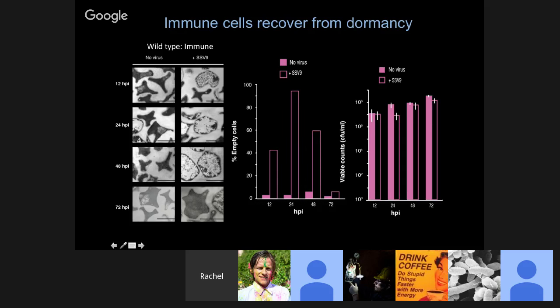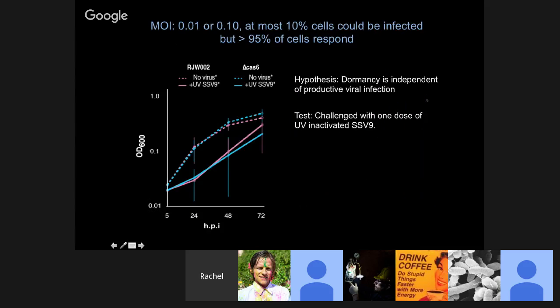This is a phenotype we call 'dormant' because they are not growing — the OD did not go up, producing this delayed growth phenotype — but they're also not dying. They're still viable. The number is constant over time, and then the cells recover and start to grow. But we had a problem because we knew immune cells were going dormant, non-immune-deficient cells were getting infected and dying, but we didn't understand the relationship between the number of virus particles present and the number of cells responding to them.